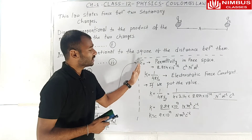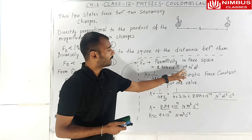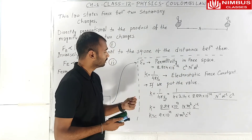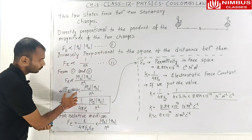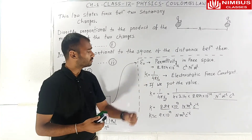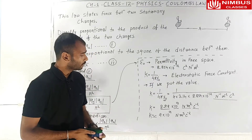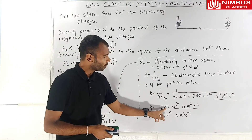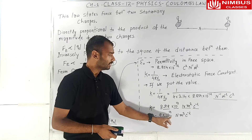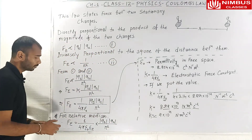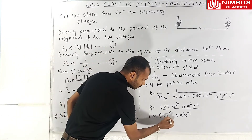The value of epsilon naught is 8.854 × 10⁻¹² C² N⁻¹ m⁻². The electrostatic force constant k is equal to 1 by 4 pi epsilon naught. The numerical value of k is approximately 9 × 10⁹ N m² C⁻². This value of k equal to 9 × 10⁹ will be used in numerical problems.